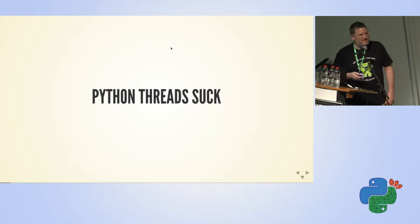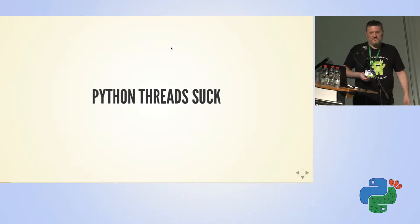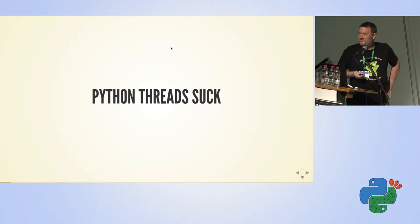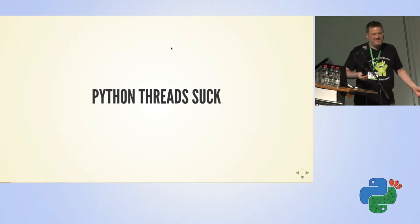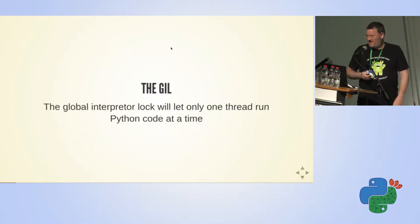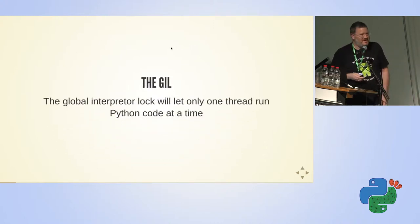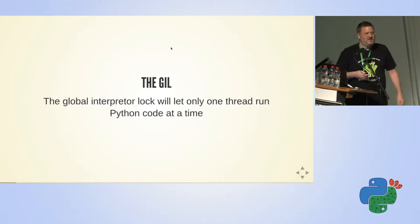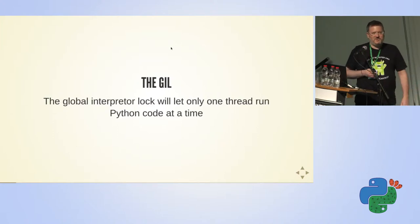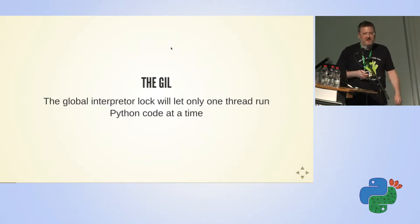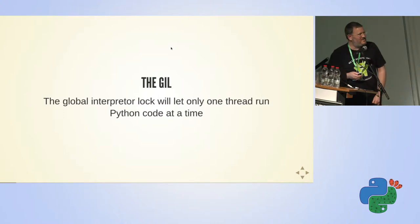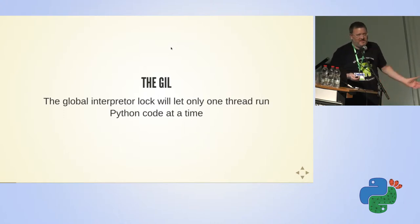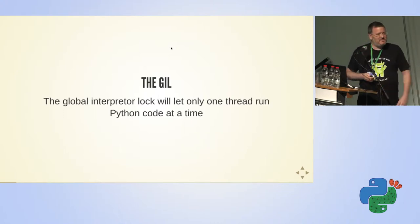Everyone knows that Python threads suck. Do you know why? With the GIL we can run only one Python code at a time. We can have only one thread running Python code. So basically we are lost.